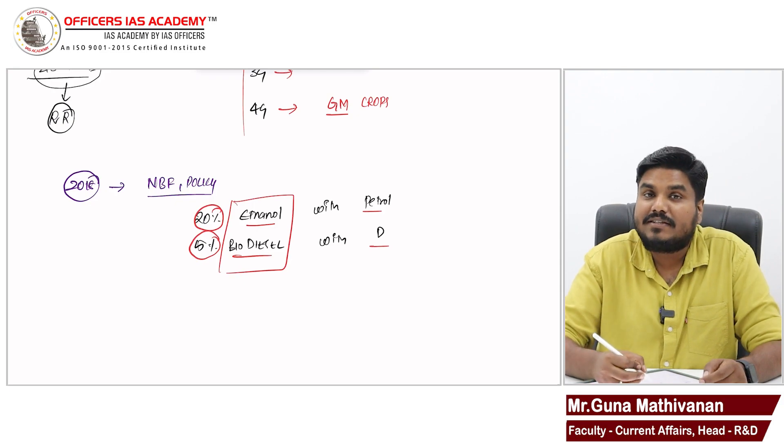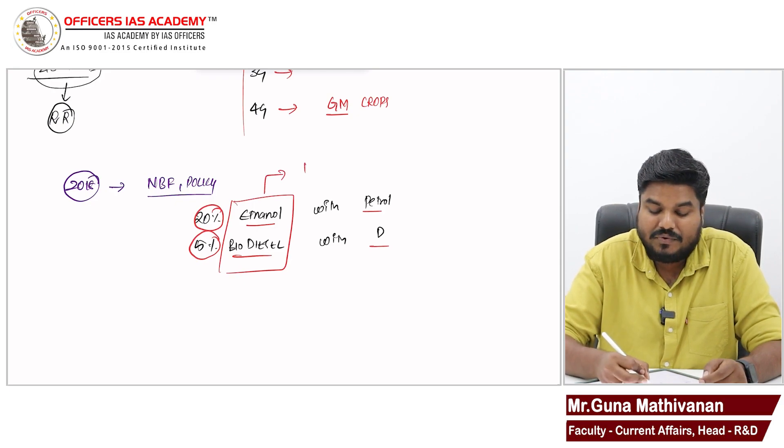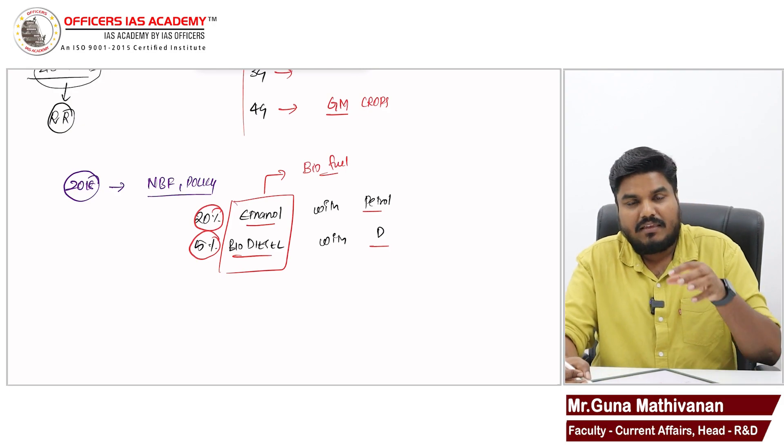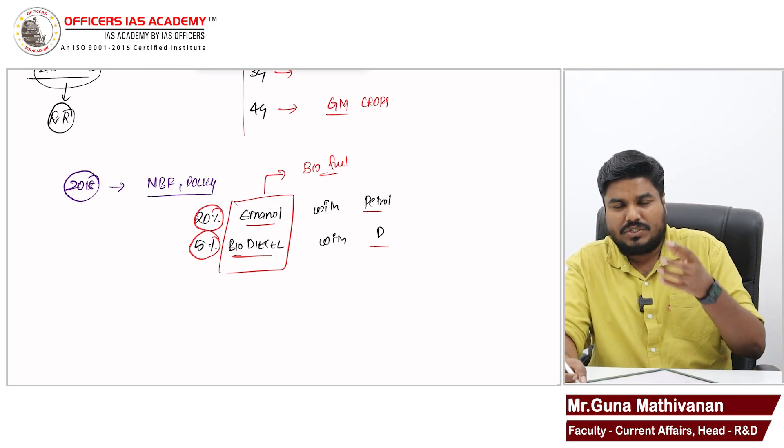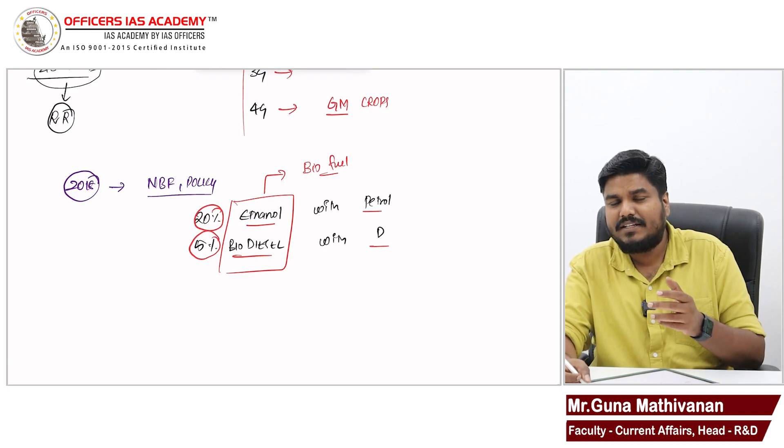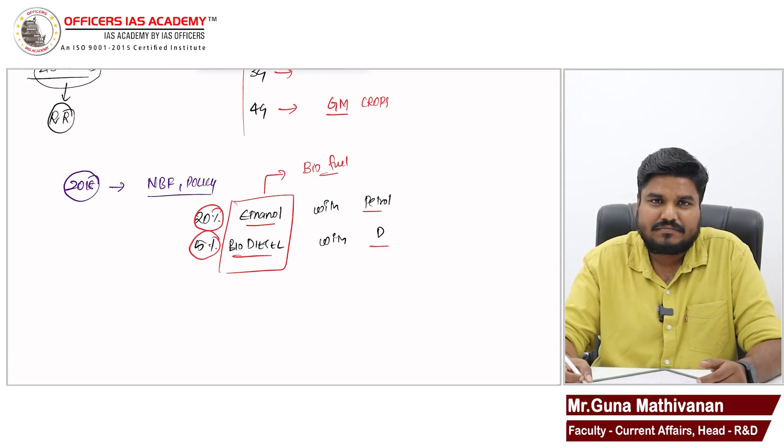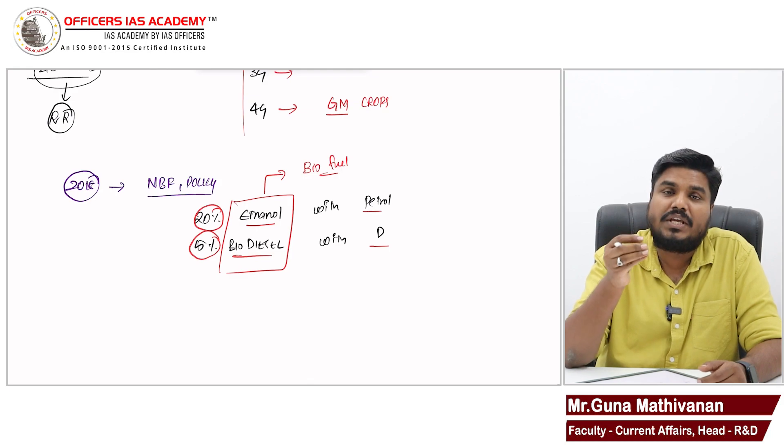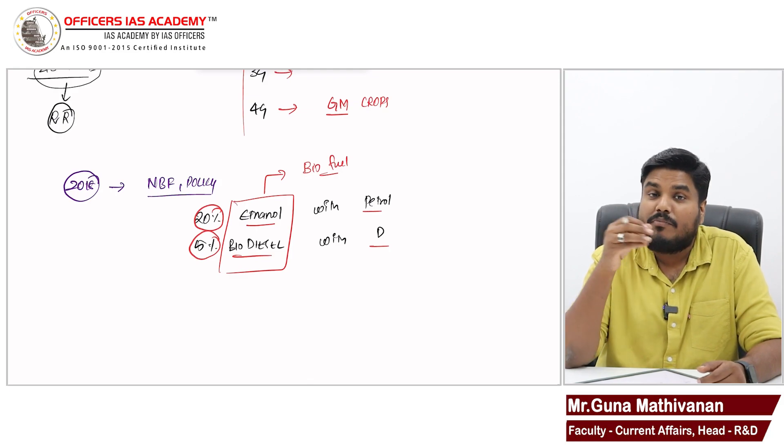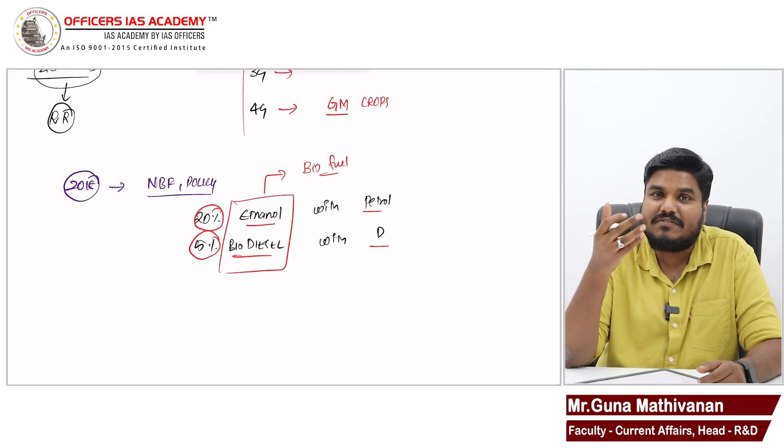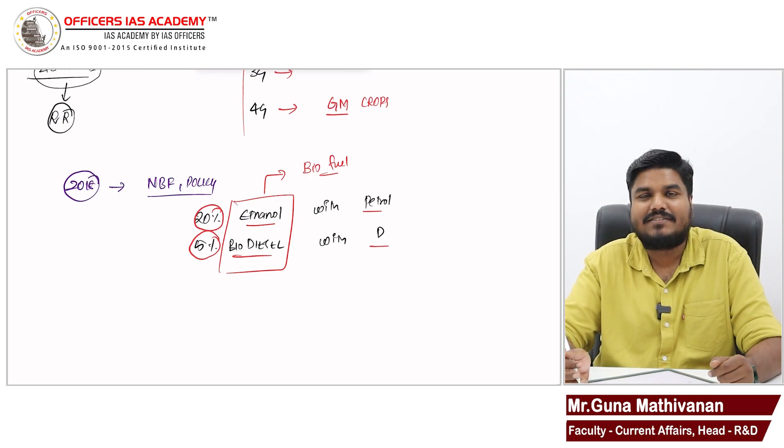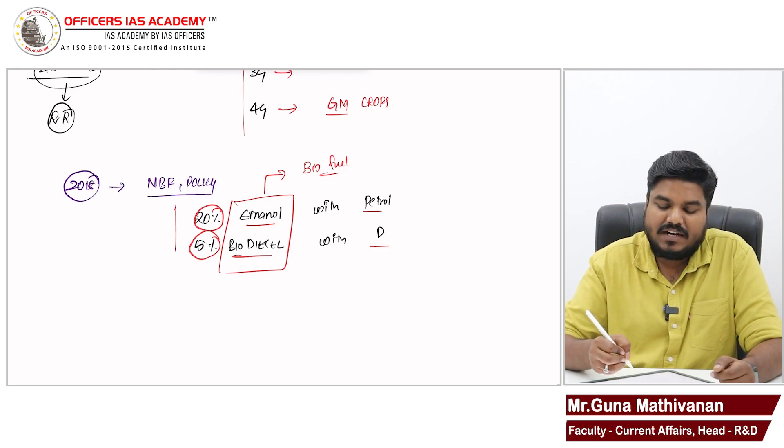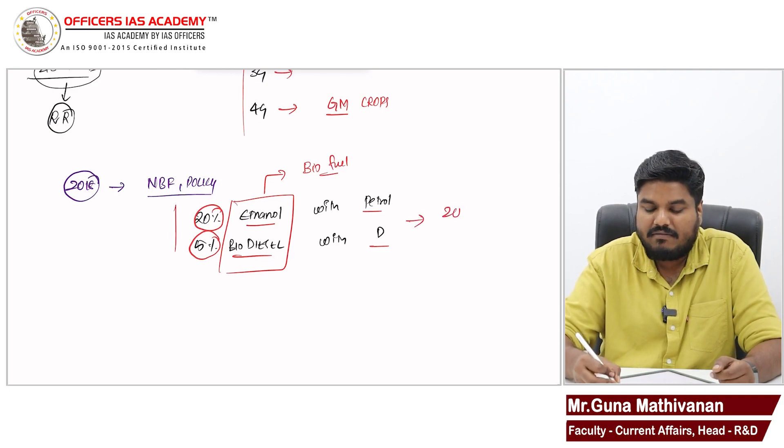Friends, ethanol and biodiesel, these are biofuels. These are examples of biofuel. Ethanol is derived from sugar containing substances. Biodiesel is derived from used cooking oil, non-edible vegetable oil, and municipal solid waste. The main aim is to achieve this blending target by 2030.